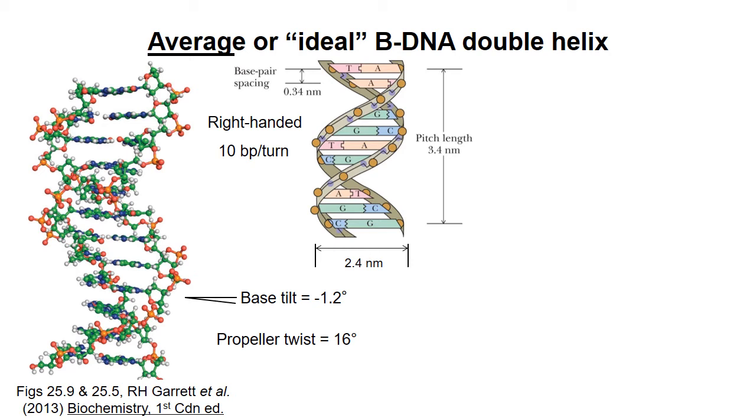It is anti-parallel and right-handed. I do expect you to be able to identify whether a helix is right-handed or left-handed just by looking at it. The B-DNA double helix has 10 base pairs per turn, with a length of 3.4 nanometers per turn, and a width of 2.4 nanometers.